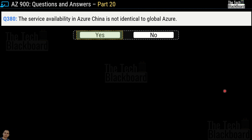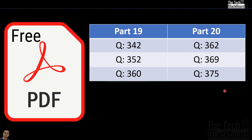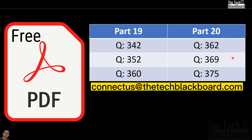If you're looking for the PDF with all the questions from part 19 and part 20, you need to tell me the correct answers for question numbers 342, 352, and 360 from part 19, and question numbers 362, 369, and 375 from part 20. You can send your answers in the comment section below or email us at connectus@thetechblackboard.com.